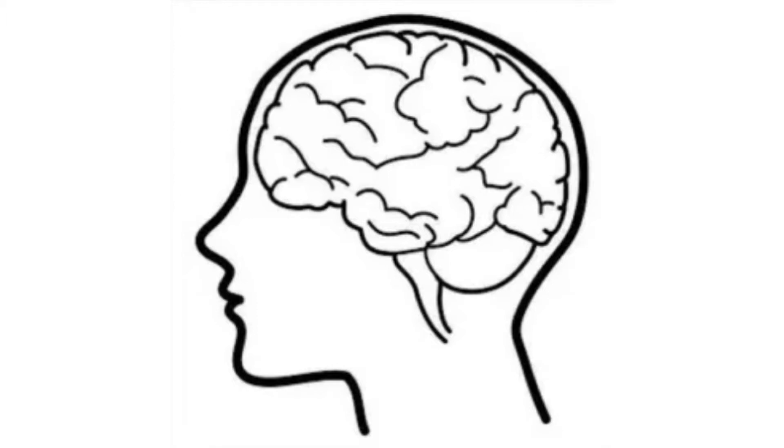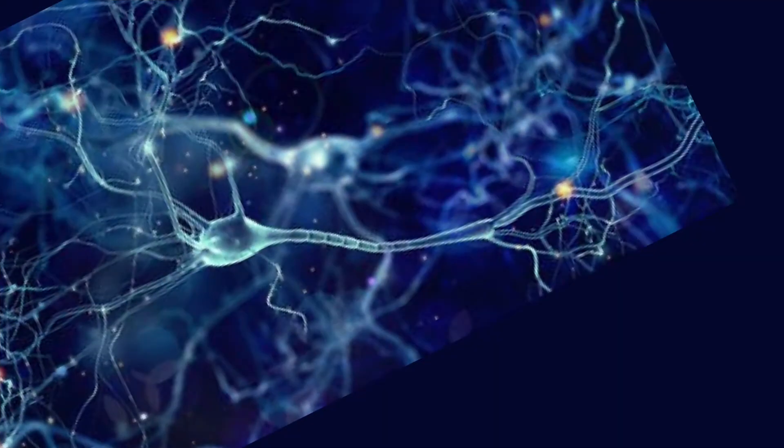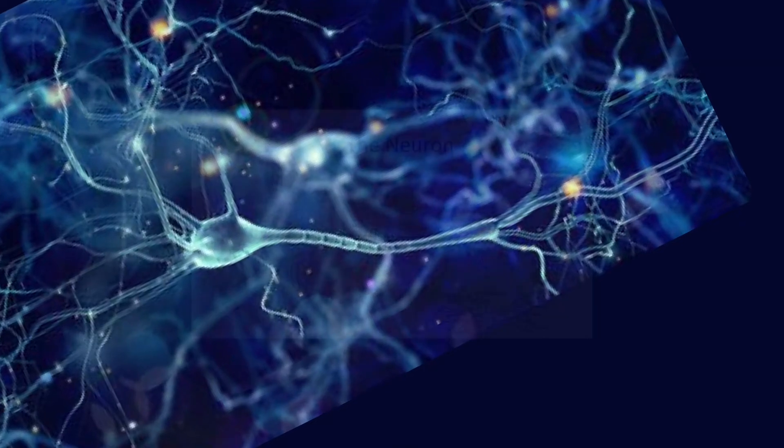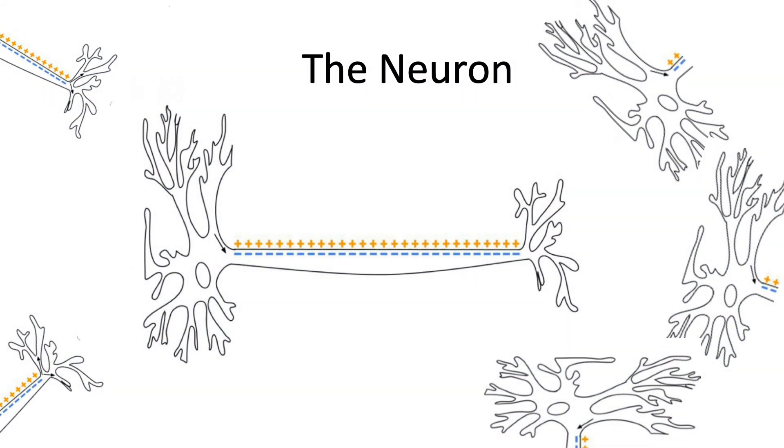The brain contains more than 100 billion nerve cells. These cells, called neurons, create a complex communication network. There are neurons throughout your body—from toes to guts to fingertips—that carry information to and from the brain.